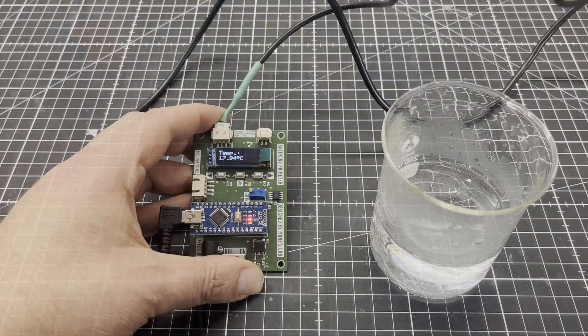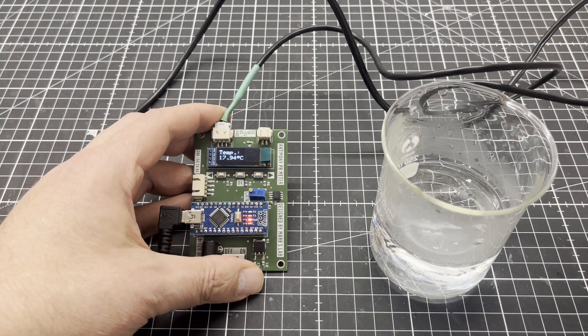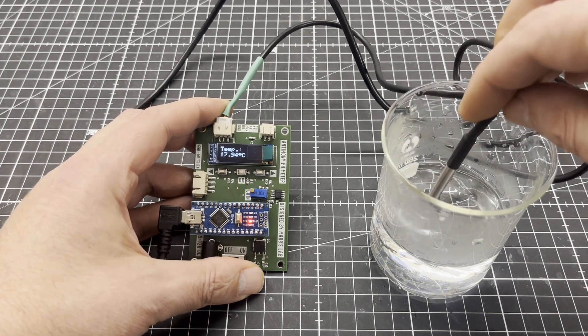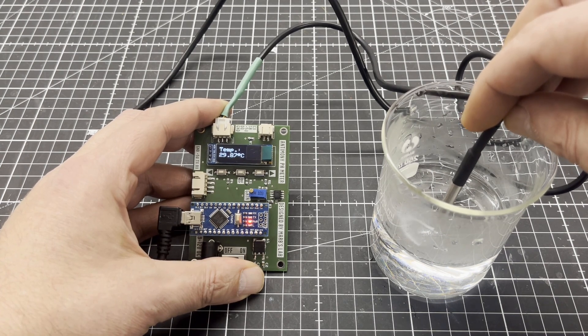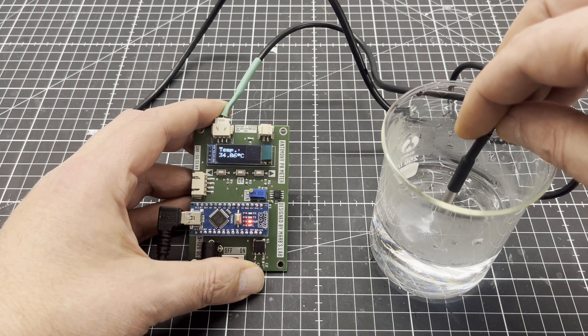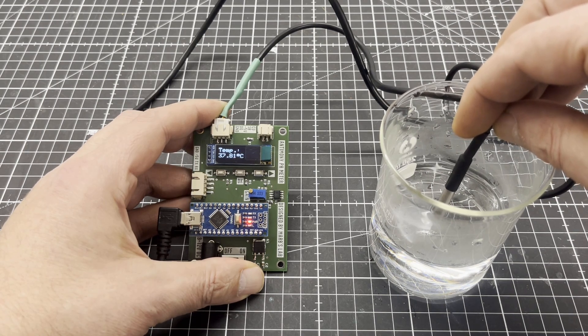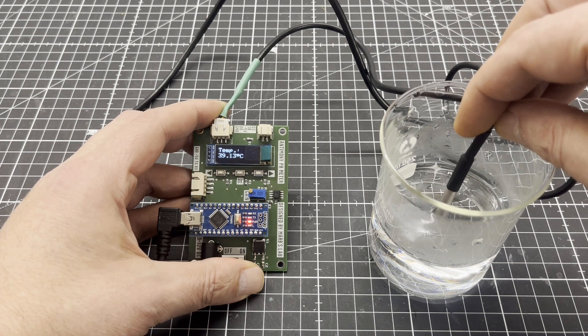As the pH value also depends on the temperature, the PCB has a connector for a DS18B20 temperature sensor, with a wide measuring range from minus 55 degrees Celsius to 125 degrees Celsius.